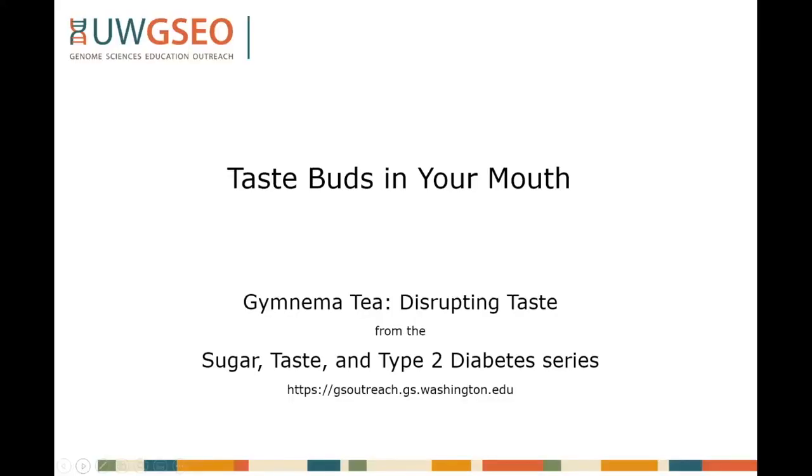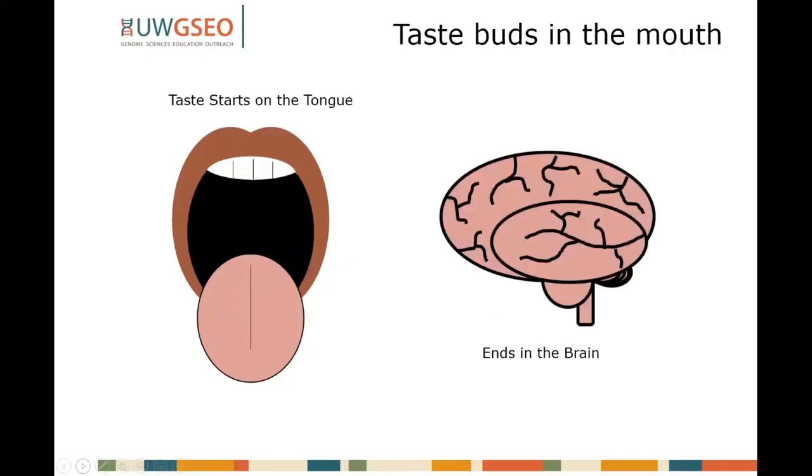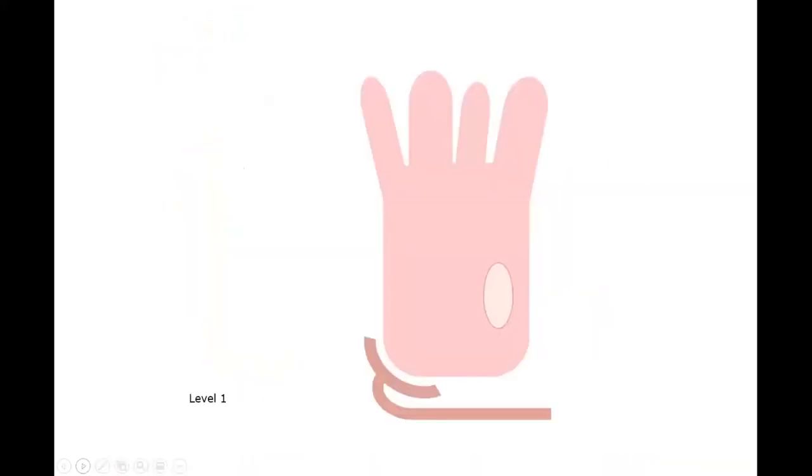So you've seen what happens when gymnema tea hits the tongue and how it affects the sense of sweetness. Let's think about how the taste buds in your mouth are reacting to this. We know that taste starts on the tongue and ends up in the brain where it's interpreted to taste sweet. So how does this actually happen?